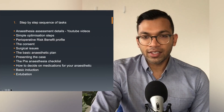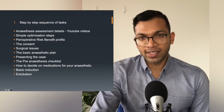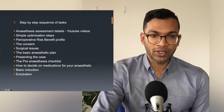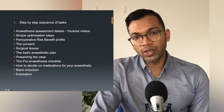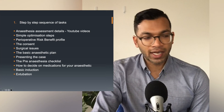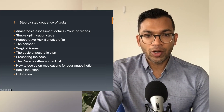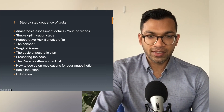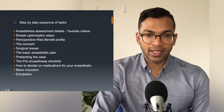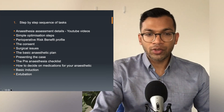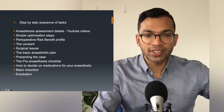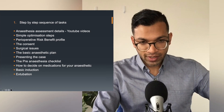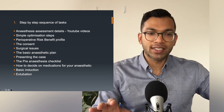The chronological approach is by far the best, because that's exactly how you'll end up in theatre — visiting your patient, making a plan, doing it all chronologically. We'll go through anesthetic assessment, simple optimization steps, a perioperative respiratory profile, consent, surgical issues, a basic anesthetic plan, how to present the case to your consultant — all the before-theatre tasks. Then the theatre tasks: the pre-anesthesia checklist, deciding on medications for your anesthetic, a basic induction, and finally extubation. That's the full chronology of what you'll do.